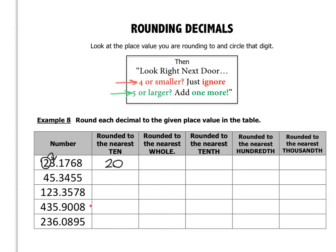For 45.3455 rounded to the nearest whole, I look at the units digit, which is 5. This rounds to either 45 or 46. To the right of 5 is a 3, which is 4-or-smaller, so I just ignore — this rounds to 45. For 435.9008 rounded to the nearest whole, the units digit is 5. To the right is a 9, so I add one more — this becomes 436.